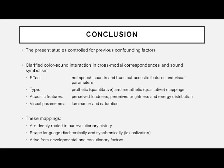To conclude: the present study controls for previous confounding factors and clarifies that color-sound interaction in cross-modal correspondences and sound symbolism operates not through specific speech sounds or specific hues, but rather through underlying parameters. The acoustic features are perceived loudness, perceived brightness, and energy distribution; the visual ones are luminance and saturation. These mappings are deeply rooted in our evolutionary history and seem to shape languages both diachronically and synchronically via lexicalization, arising from developmental and evolutionary factors.